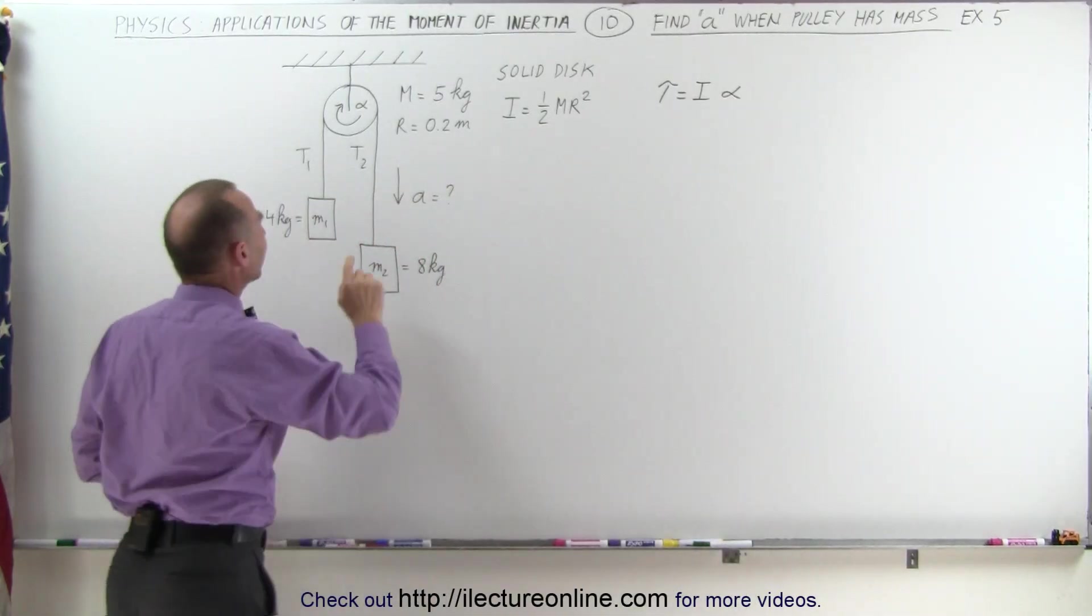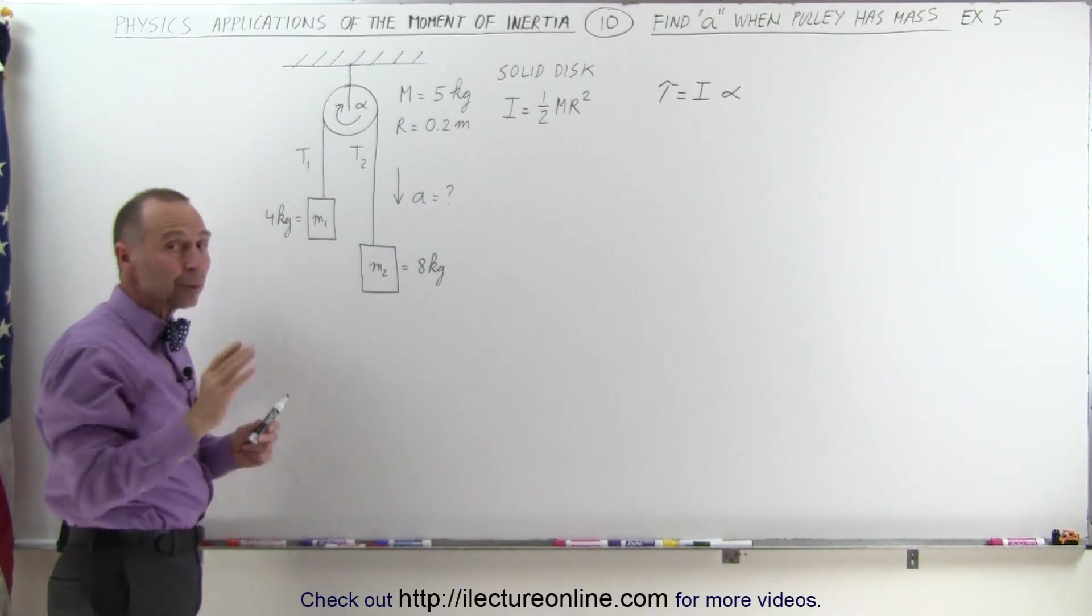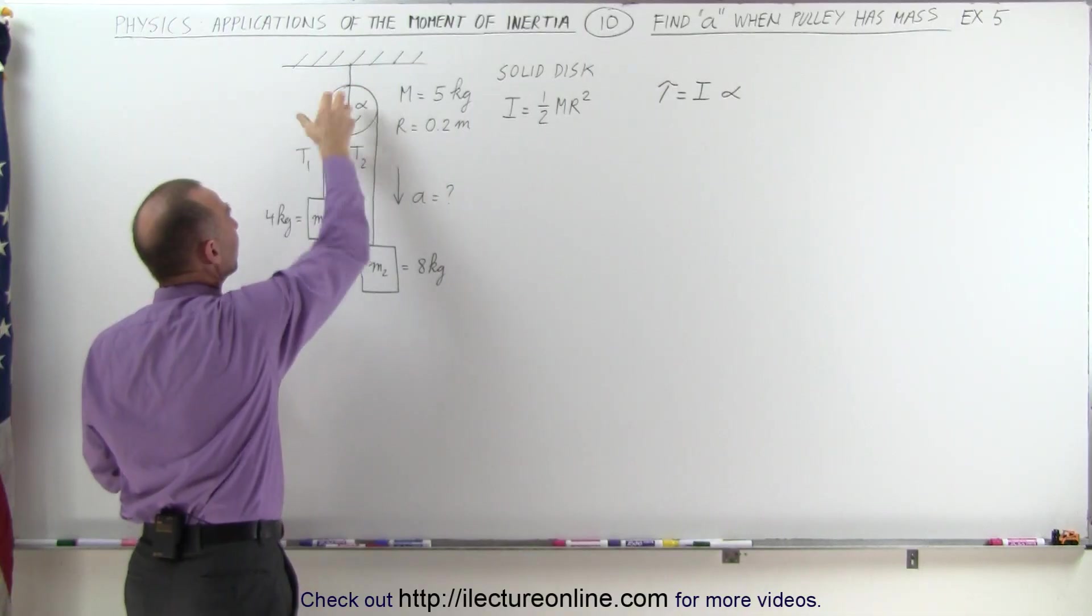What's causing the torque here? It's the tension in the string on both sides. Here T1 again is not equal to T2 and it's the difference in the tensions that causes the torque about the pulley.